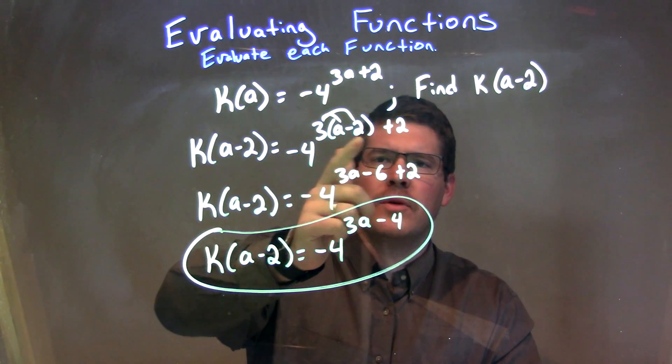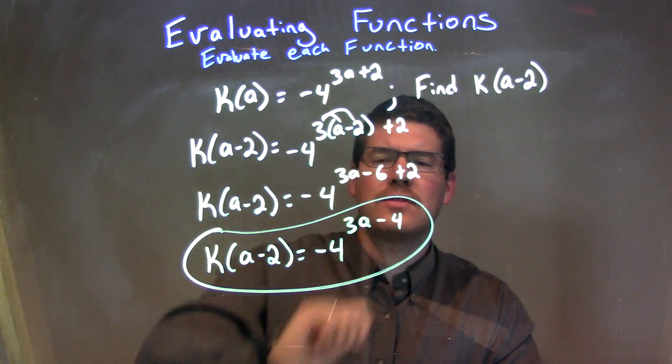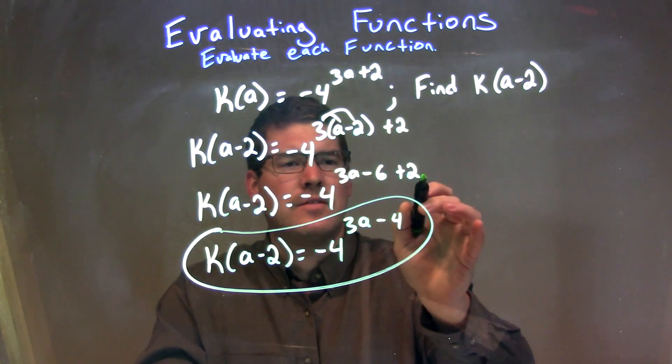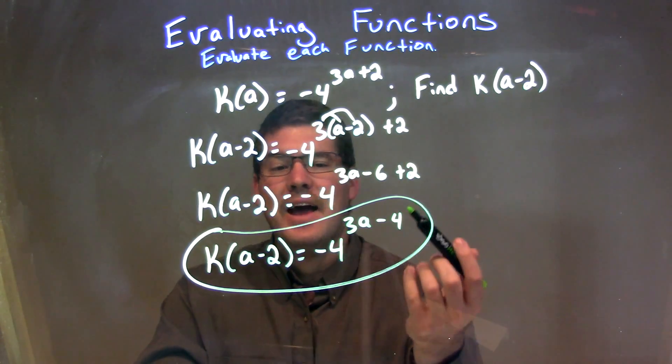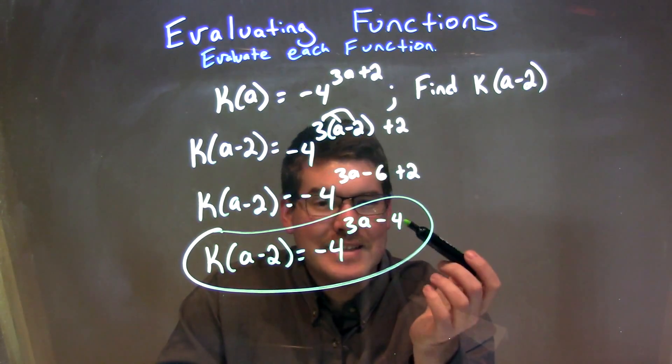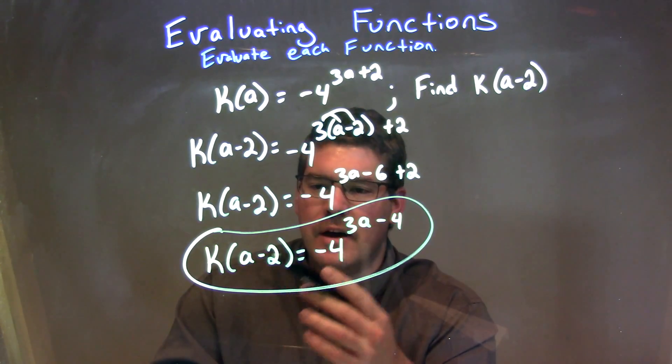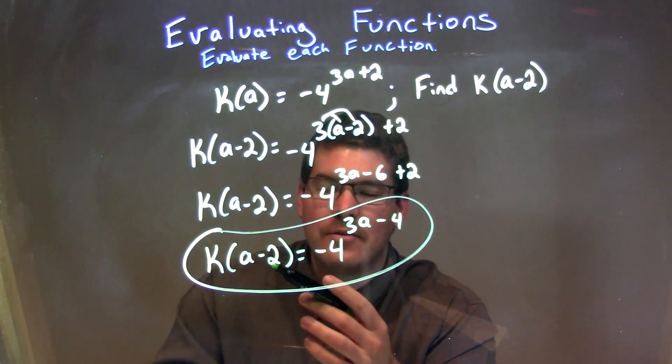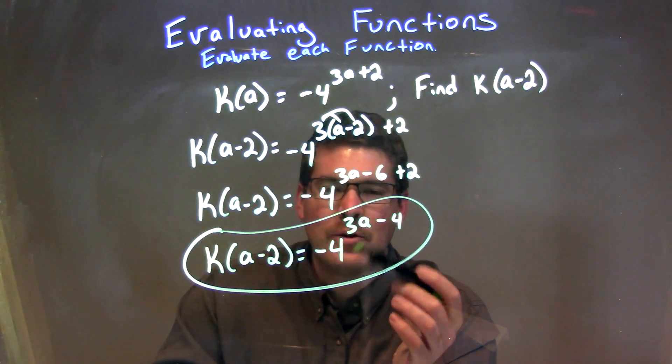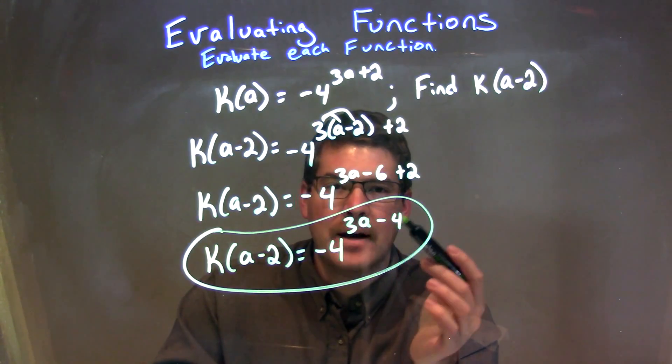We simplify that. We distributed 3 to both parts, giving me 3a minus 6. And then, I combine the negative 6 and the positive 2 to be a negative 4. At this point, there is no more that we can simplify. So, our final answer here is k of a minus 2 is equal to negative 4 to the power of 3a minus 4.